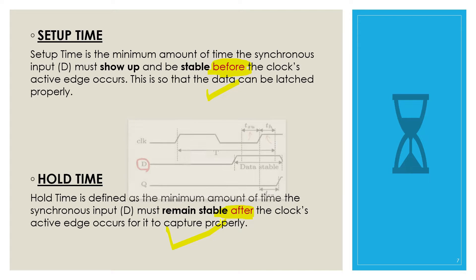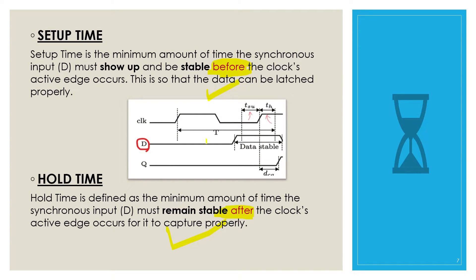Let us understand this with the help of a diagram. The data input D needs to be stable at least for a certain time before the active edge of the clock, known as T_setup or T_SU. The data input also needs to remain stable after the active edge of the clock for a certain time, referred to as hold time, denoted by T_H.